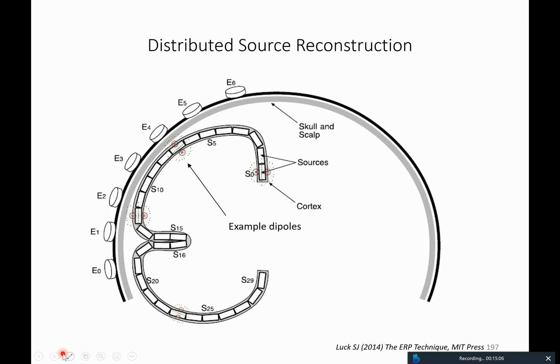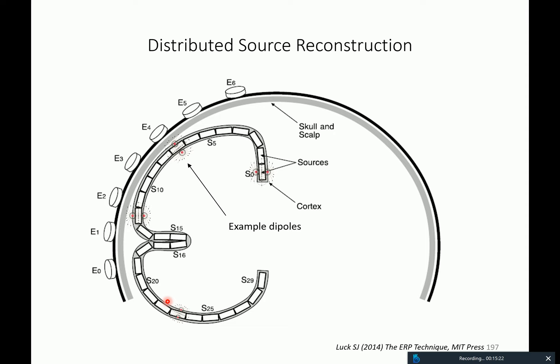This is an example from the Luck book of a cortical constraint — here you would have some cortex, and at all of those locations a dipole would be situated, and the question is to estimate its moment. In terms of the formulation, it looks different compared to the single dipole case because now you have multiple dipoles. The data haven't changed — that's still a 64-dimensional data vector.